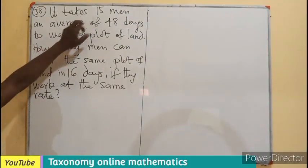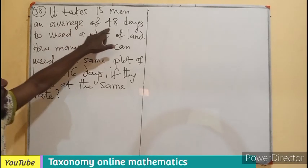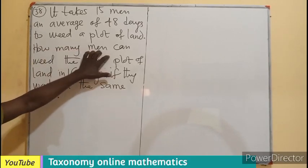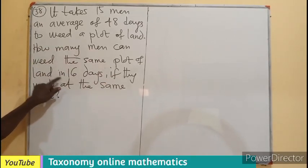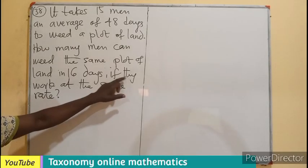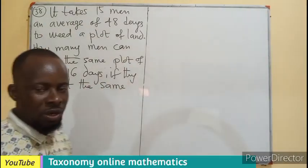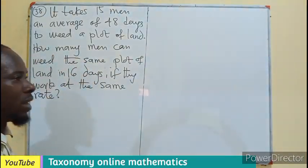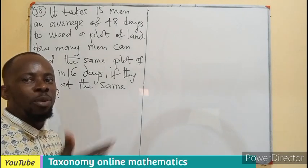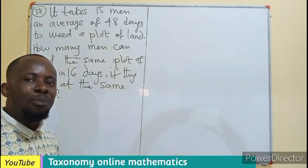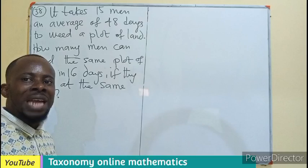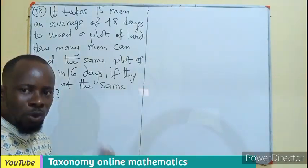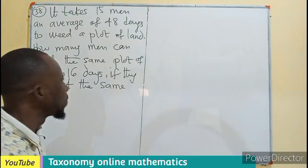Question 38. It takes 15 men an average of 48 days to weed a plot of land. How many men can weed the same plot of land in 16 days if they work at the same rate? So we know this is a ratio and proportion question. Under proportion, we have direct proportion and indirect proportion. Your ability to digest the question, know whether it is direct or indirect, will help you produce an answer.